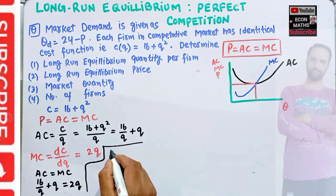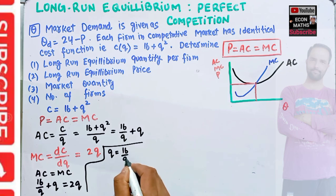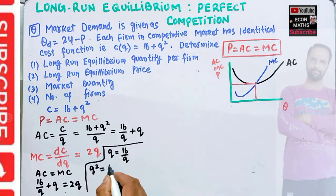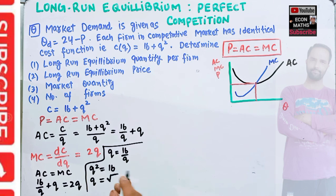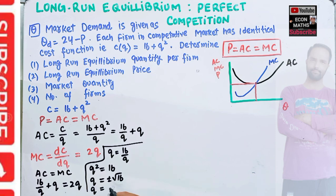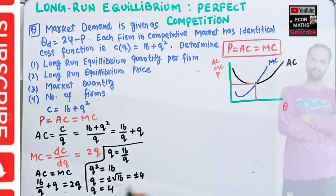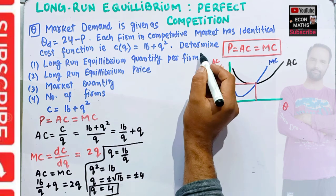Solving: transposing gives Q = 16/Q, which means Q² = 16, so Q = plus or minus the square root of 16, which is plus or minus 4. We discard the negative value because quantity cannot be negative, so Q = 4. Each firm will produce 4 units — the long-run equilibrium quantity per firm is 4.